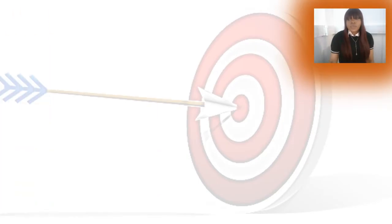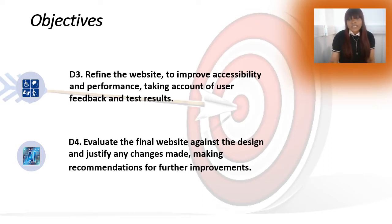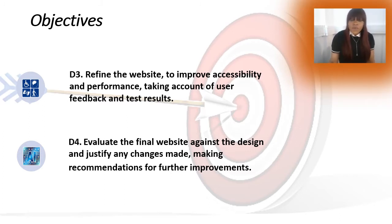We are also going to go through the objectives. For D3, distinction three, you will be refining the website to improve accessibility and performance, and we're also going to take into account user feedback and the test results. For D4, distinction four, we're going to evaluate the final website, justify any changes we have already made, and make recommendations for further improvement.